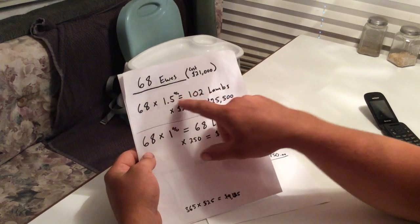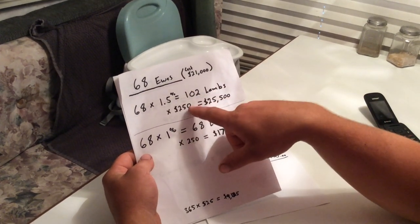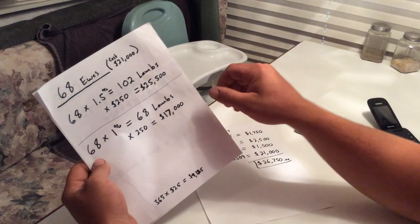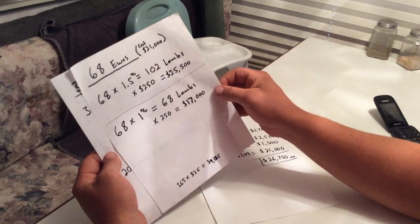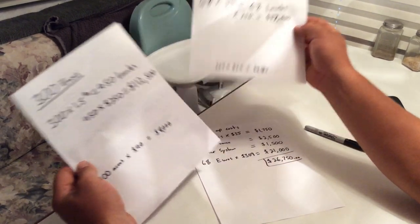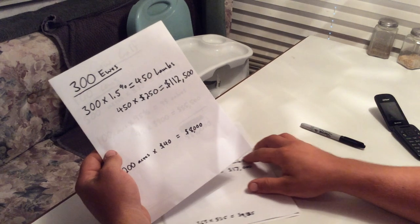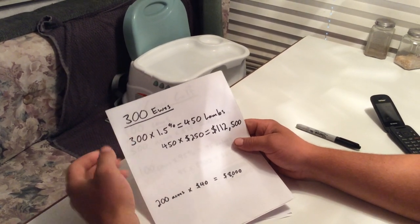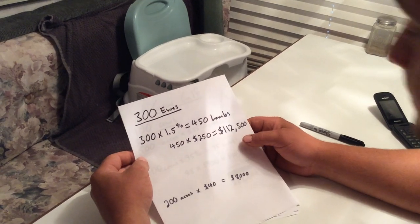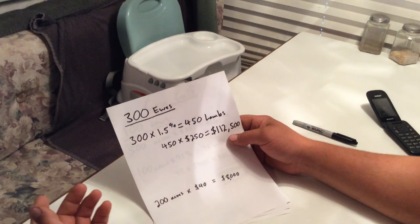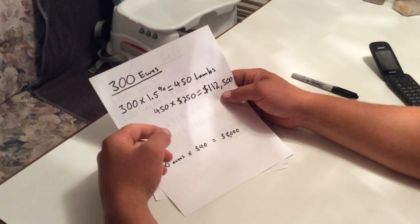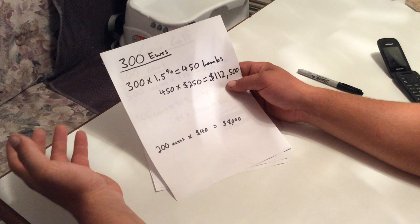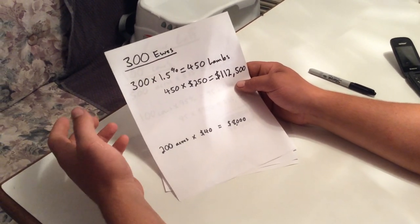So, once we pay off, if we were able to get 102 lambs and pay off the ewes the first year, I would easily be able to pay myself $25 an hour next year to take care of them. So, there's that. We'd like to get up to at least 300 ewes. And, so the numbers on that look even better, especially since we wouldn't be buying a flock of 300 and not know when they're going to lamb like the flock we bought. Or if they're going to lamb.